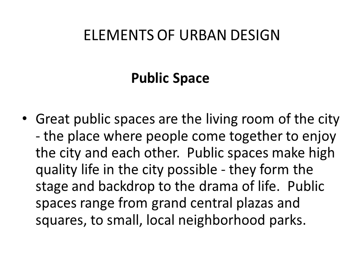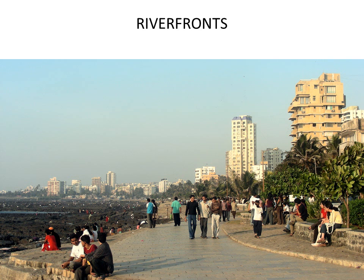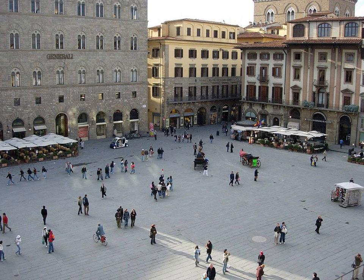Public spaces are the living room of the city — the place where people come together to enjoy the city and each other. Public spaces make high-quality life in the city possible. They form the stage and backdrop to the drama of life, ranging from grand central plazas and squares to small local neighborhood places. These are piazzas — created by the form of buildings around a central space, providing a grand public space for people to gather. A riverfront promenade, such as along the sea in Mumbai, becomes a strong public space. Squares like these are also important public spaces.